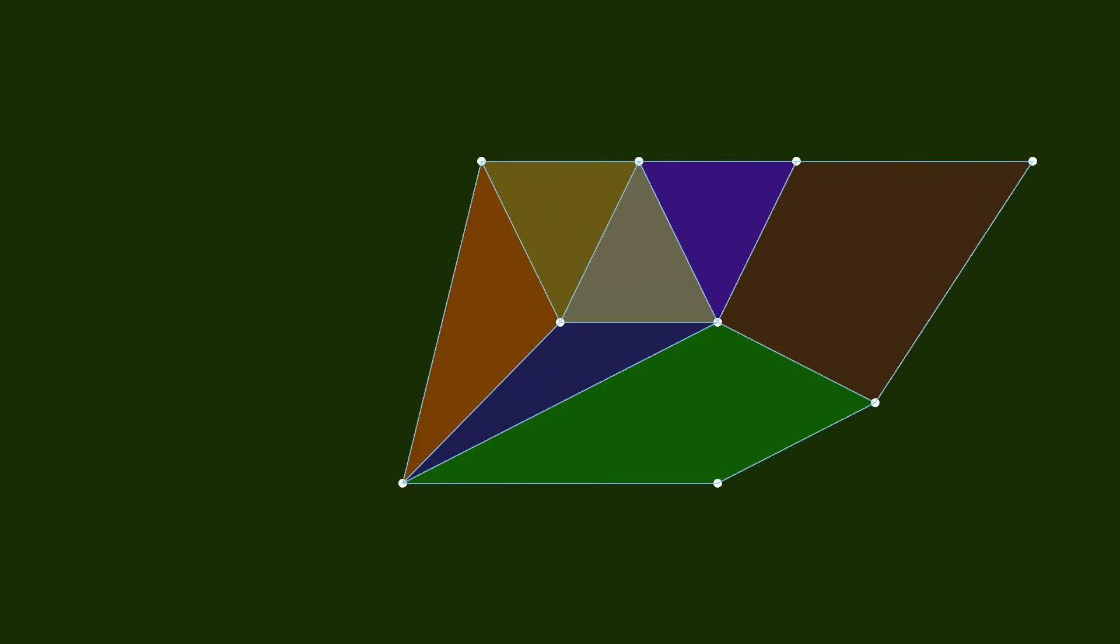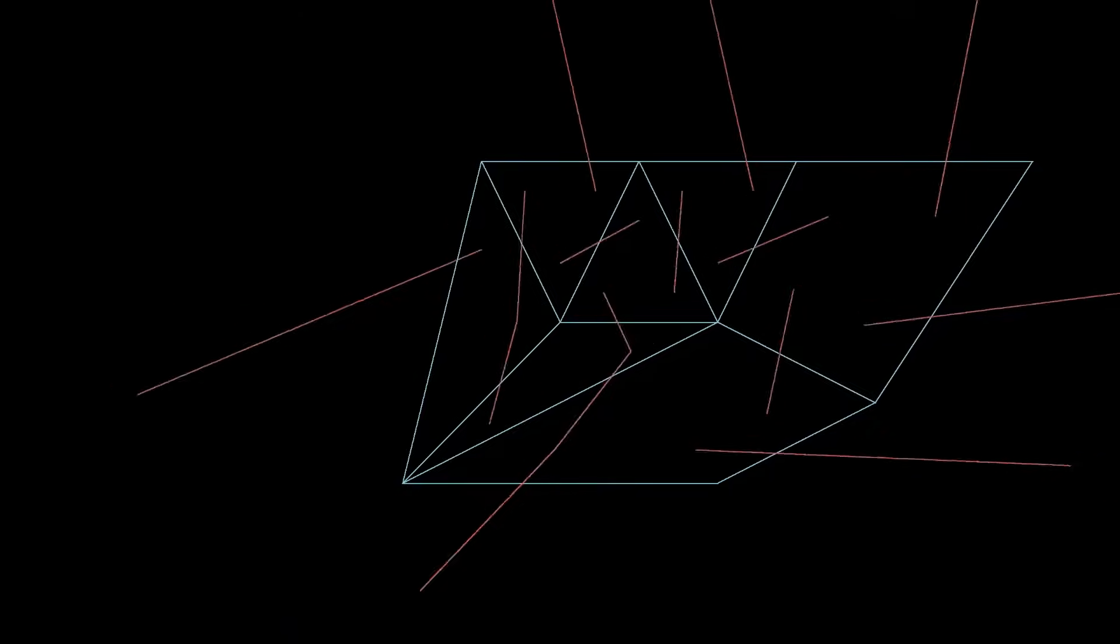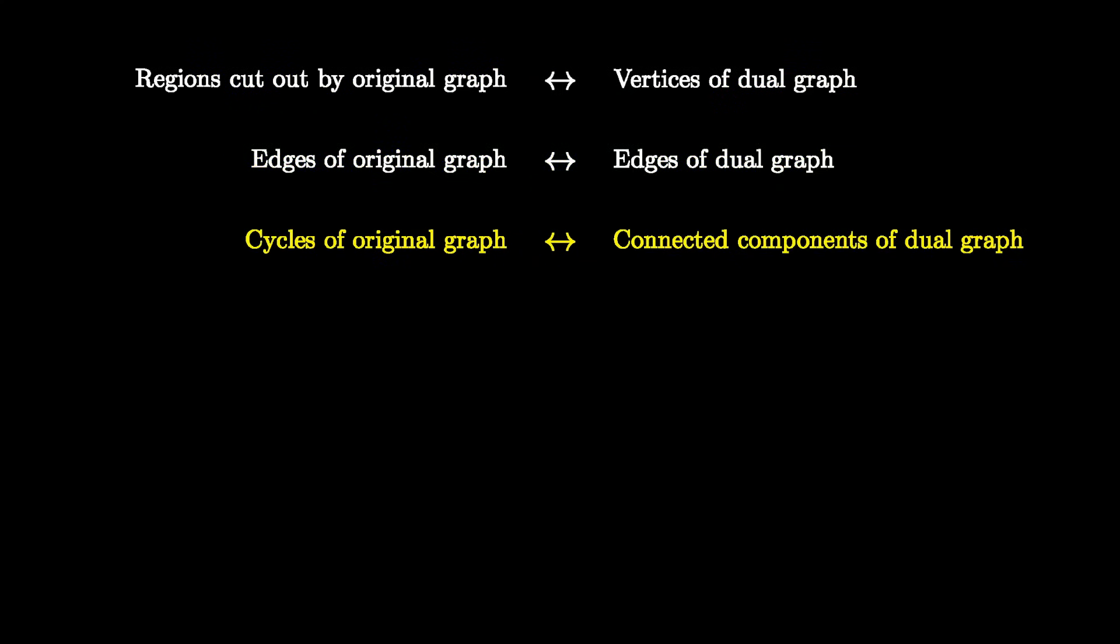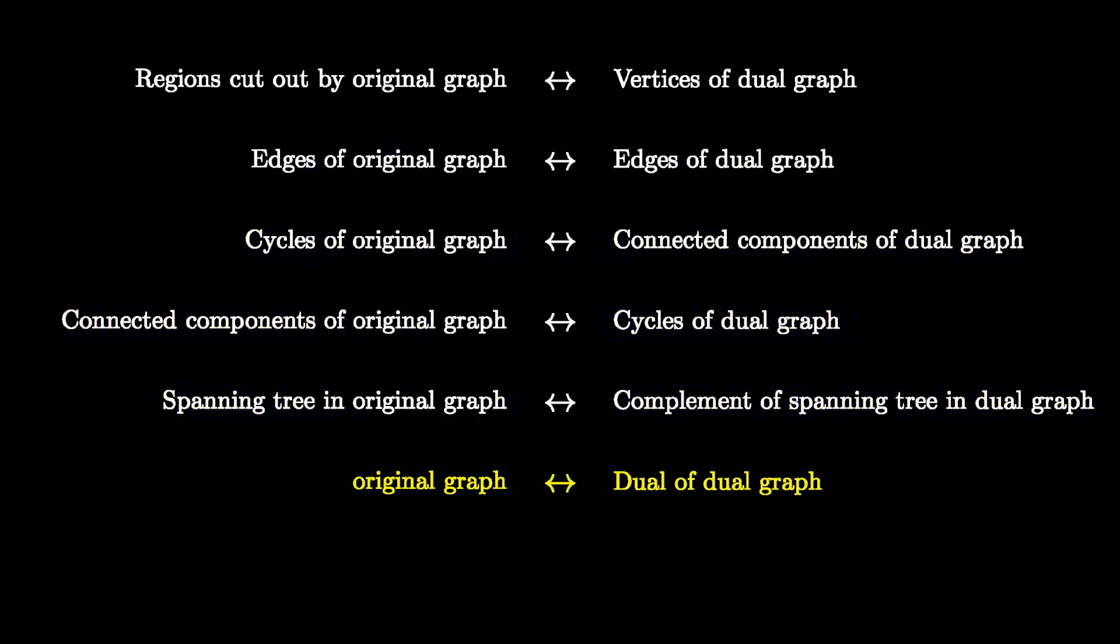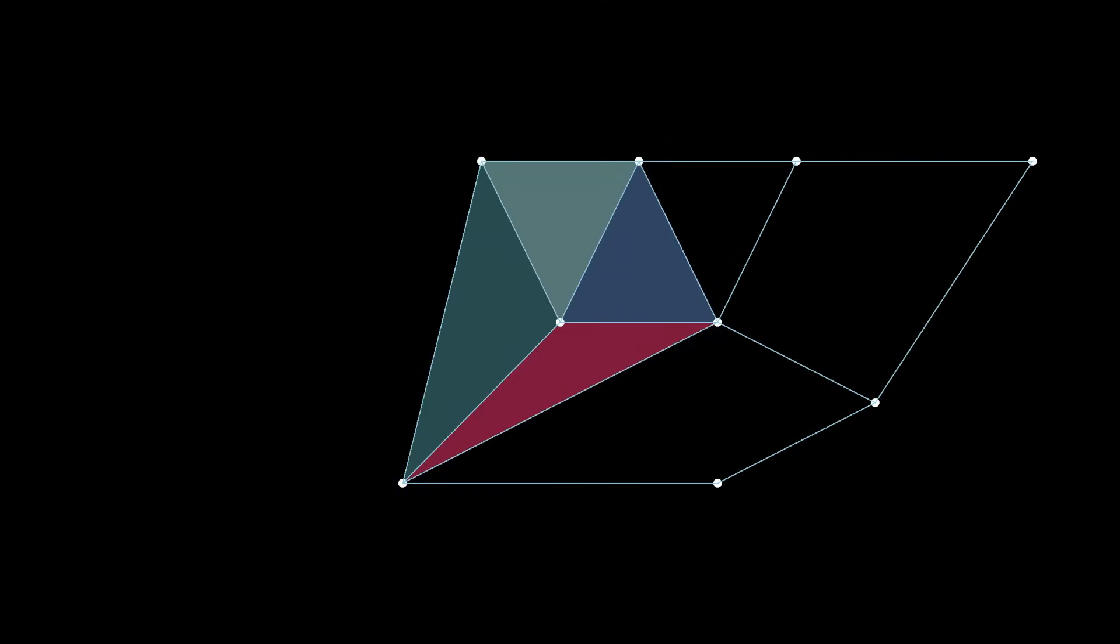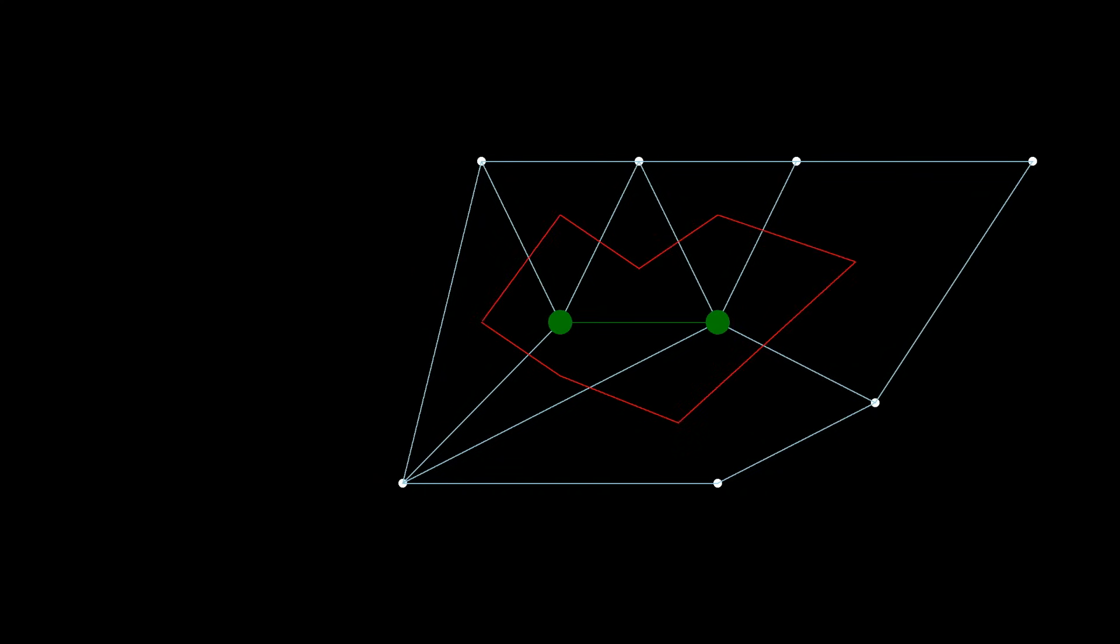The reason I stress this point is to emphasize that edges of the original graph and edges of the dual graph are not just related, they're the same thing. You see, what makes the dual graph all kinds of awesome is the many ways that it relates to the original graph. For example, cycles in the original graph correspond to connected components of the dual graph, and likewise, cycles in the dual graph correspond with connected components in the original graph.